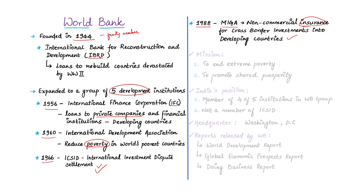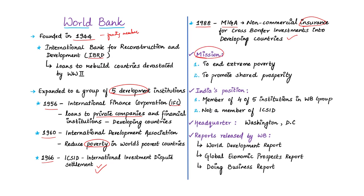The mission of the World Bank is twofold: to end extreme poverty by reducing the share of global population living in extreme poverty to 3% by 2030, and to promote shared prosperity by increasing the incomes of the poorest 40% of people in every country. India is a member of four out of five institutions in the World Bank group — India is not a member of the International Centre for Settlement of Investment Disputes. The World Bank publishes three key reports: the World Development Report, the Global Economic Prospects Report, and the Ease of Doing Business Report.